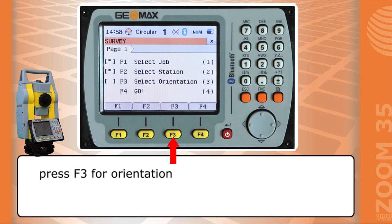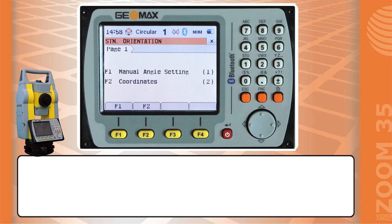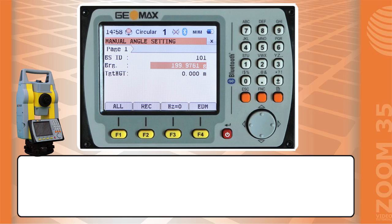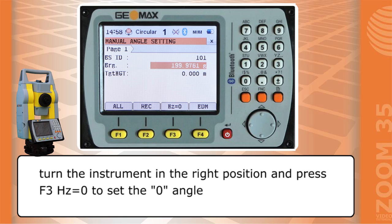Press F3 for orientation. Press F1 to set angle. This angle represents Y axis direction. Turn the instrument in the right position and press F3 to set the zero angle. Press F2 to record this data.